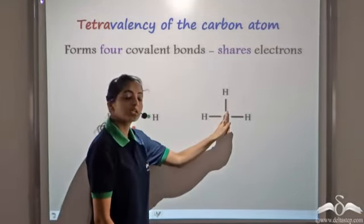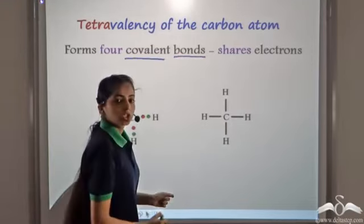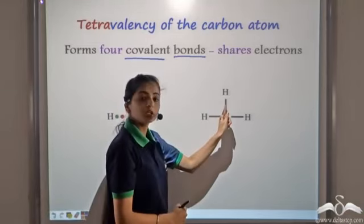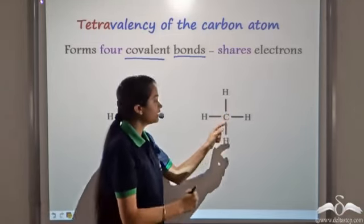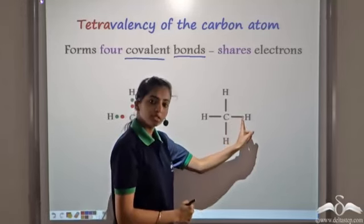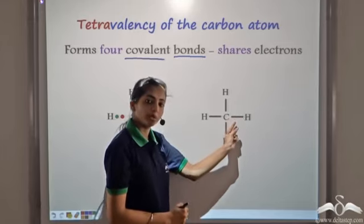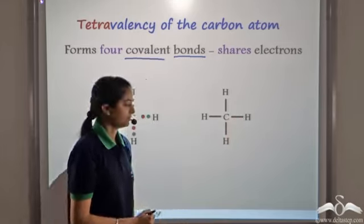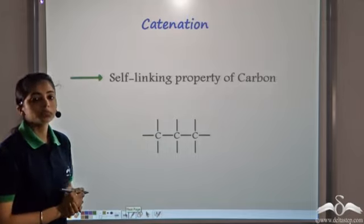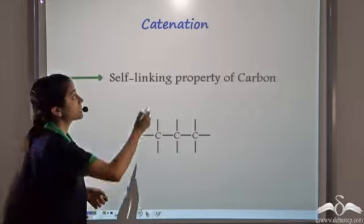This bond is the covalent bond, showing the sharing of electrons — specifically 2 electrons being shared between the 2 atoms. So whenever we show a bond, this means there are 2 electrons being shared by this bond. Another important property of carbon, because of which it forms millions of compounds, is catenation.